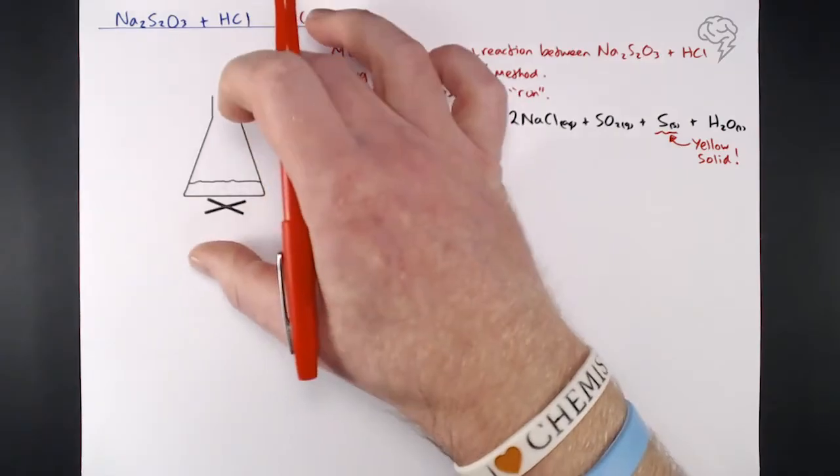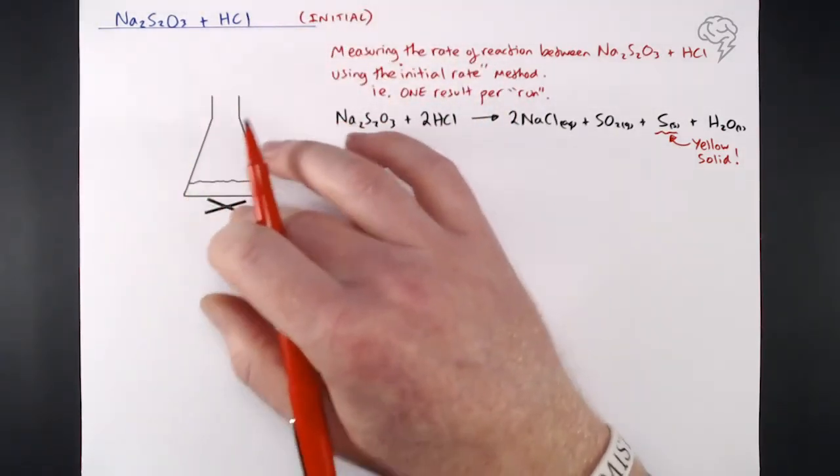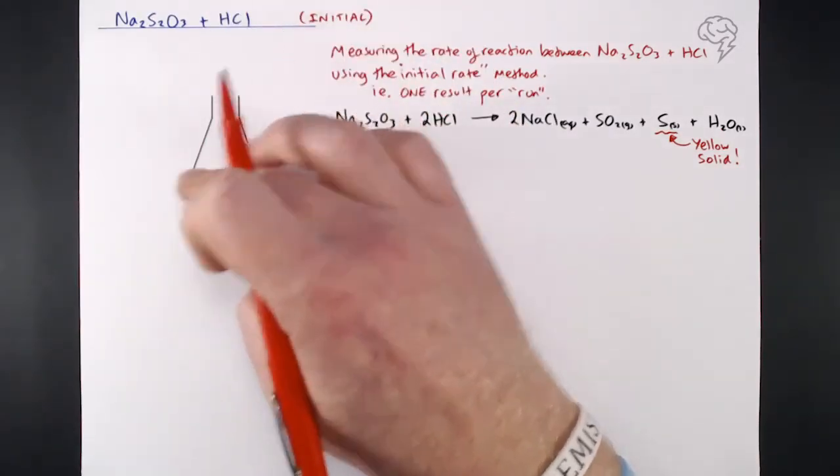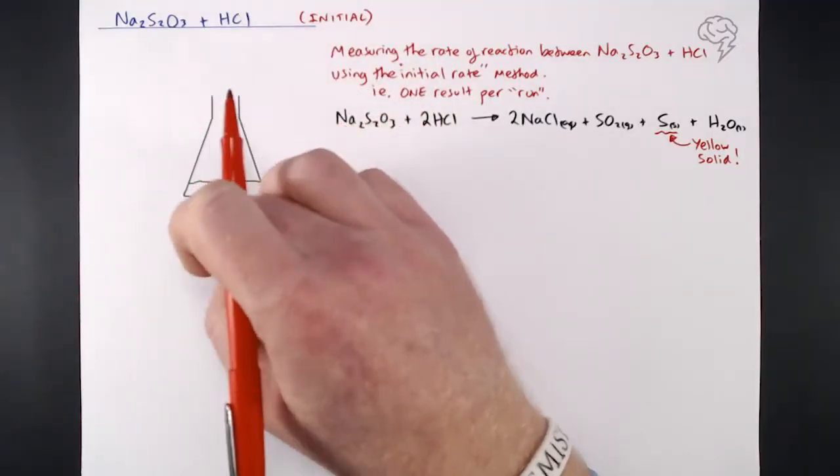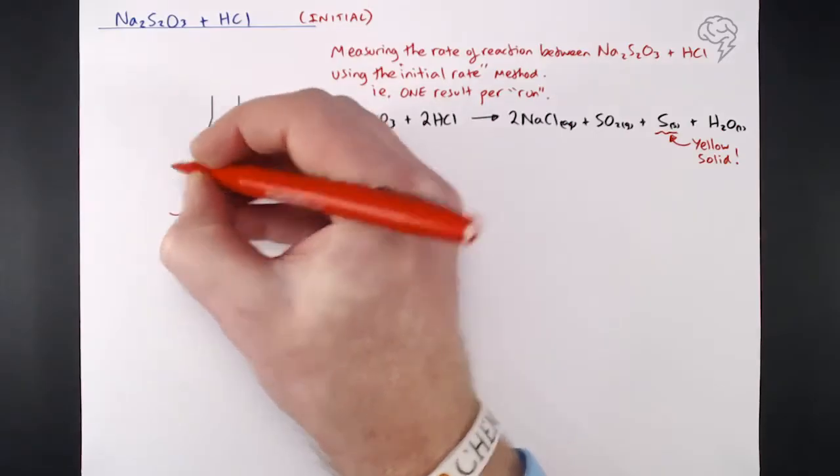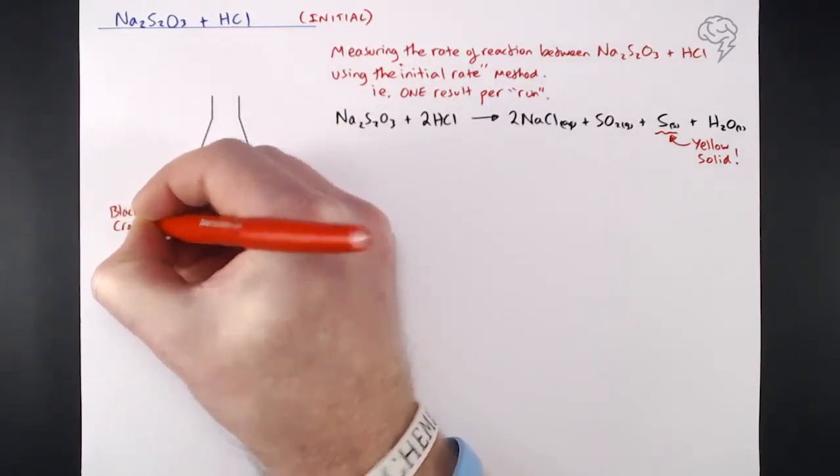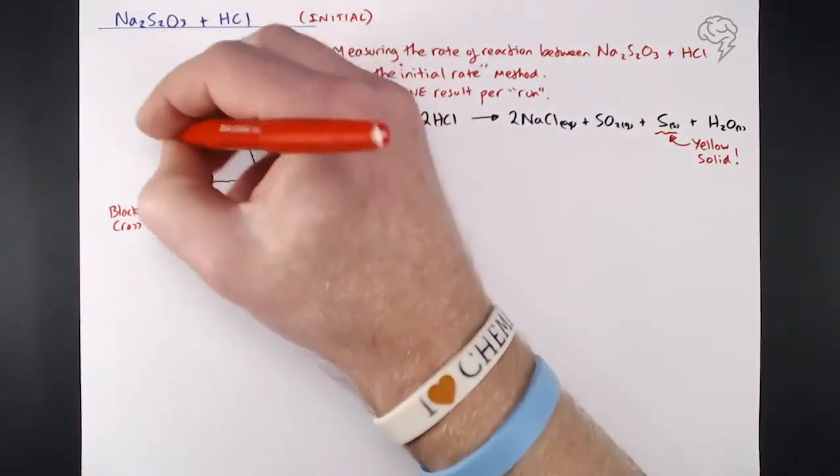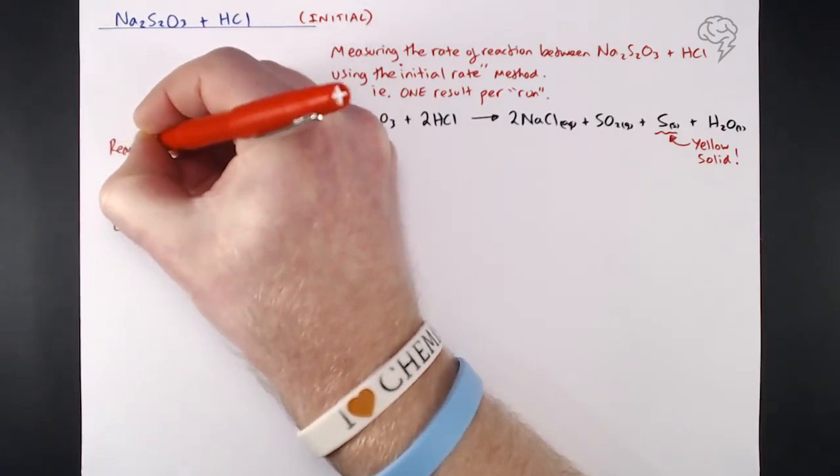Over here, this is our setup simple conical flask. And what we've got is usually a card with a big fat black cross underneath it that the conical flask sits on. It was hard for me to draw that on here. But we're sitting a conical flask on a piece of paper or a piece of card with a big black cross on it. So this black cross here. We can see very, very clearly through the bottom of this glass conical flask. In here, of course, these are our reactants.